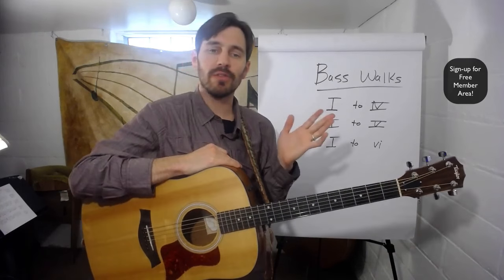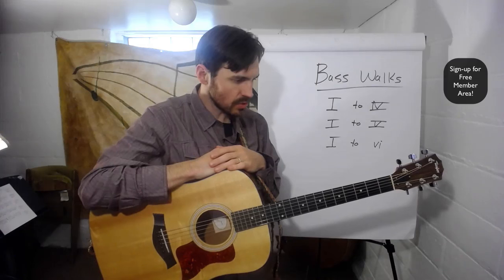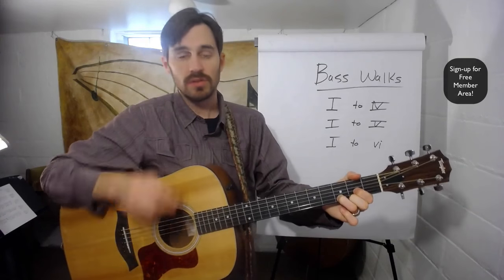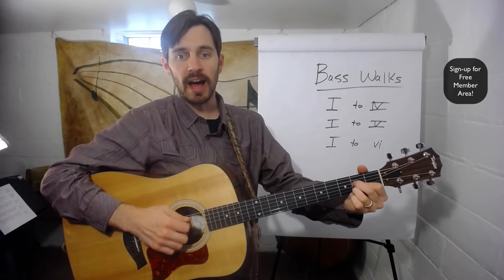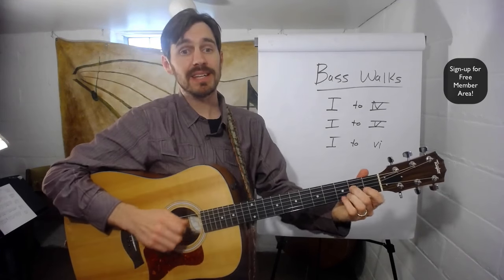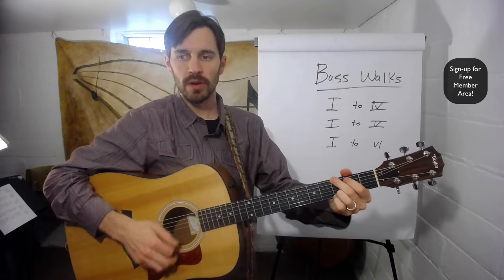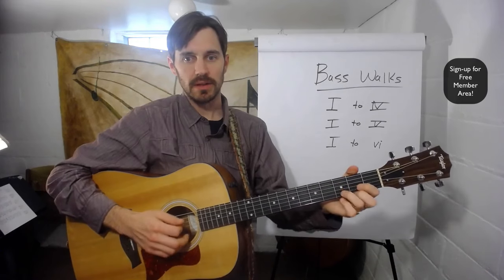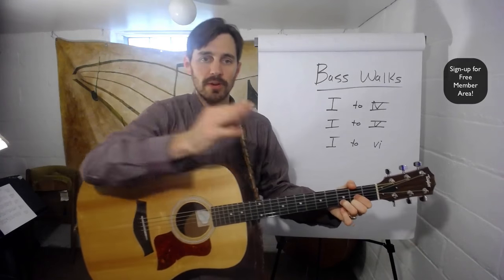So now let's try a different key — let's transpose it and do the key of D. D is my 1, G is my 4, A is my 5, and my 6 is B minor. If you're not familiar with that, that's alright, but I strongly suggest starting to wrap your head around it. It's not as hard as it may seem, but it's kind of for a different lesson for now.